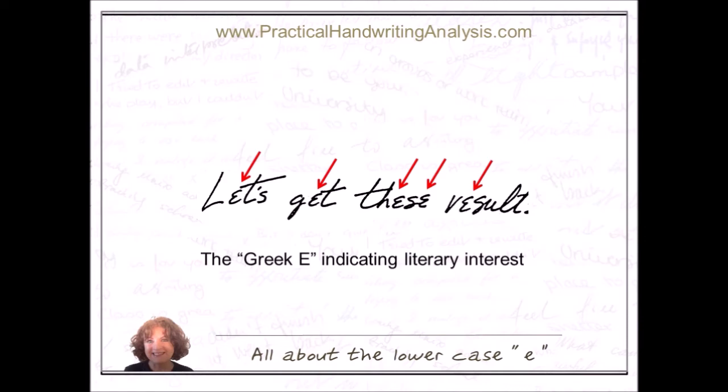Anytime you see someone writing like that for an e, and also some people use that symbol for an r, a lowercase r, so if you see that symbol whether it's a lowercase e or lowercase r, it indicates literary interest. So now you know three different traits: narrow-minded, open-minded, and the Greek e.